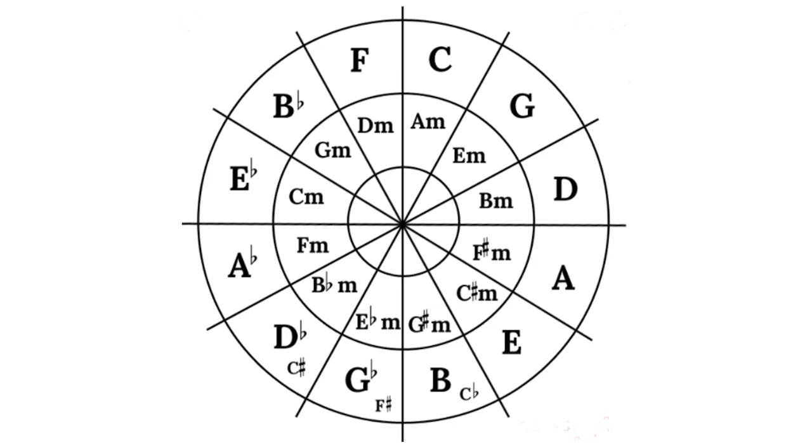You may remember near the beginning of the video that I mentioned enharmonic notes and how one note can have two names like C sharp and D flat. Well as a general rule in sharp keys we use the sharp name and in flat keys we use the flat name. Like these enharmonic notes,